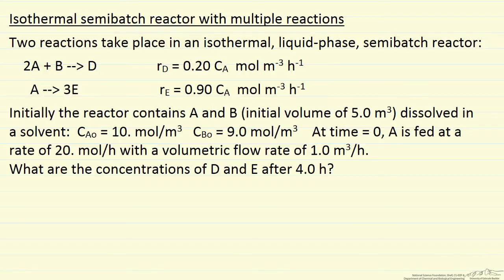In this problem we have an isothermal semi-batch reactor with two parallel reactions. We're given the initial amounts of A and B in the reactor and the initial volume. We start feeding additional A into the reactor, and the question is, after four hours of reaction, what are the concentrations of D and E?